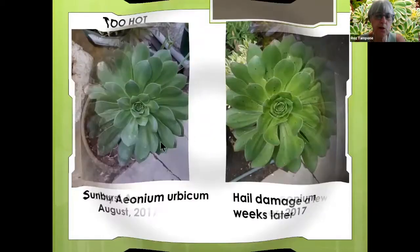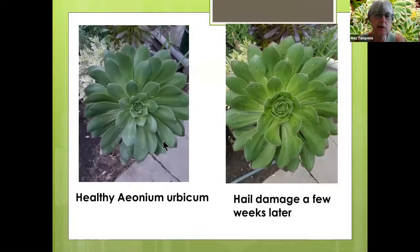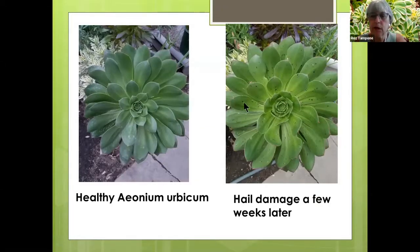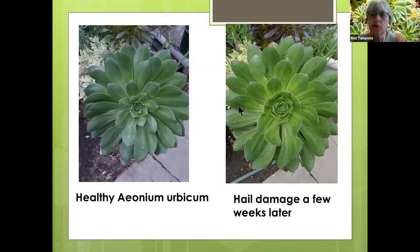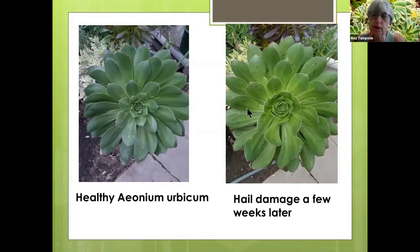Here's a healthy aeonium arboreum, sometimes called a dinner plate aeonium — it can grow up to about 20 inches across. Several years ago we had hail in the Fresno area. I took this picture about three or four weeks before the hail, and you can see the damage — just these little black marks. But several months later those hail marks went away and the plant looked much as it did originally. The good news about hail damage is that it doesn't scar your plants permanently.